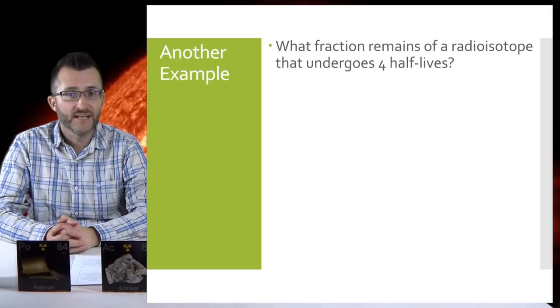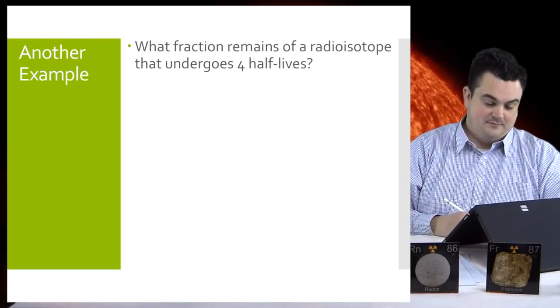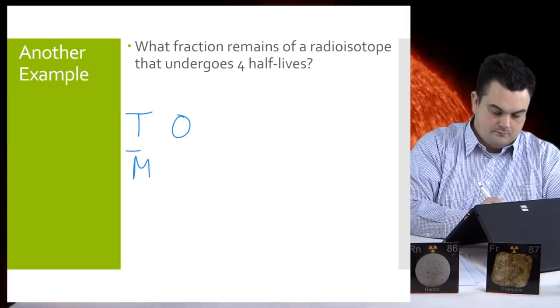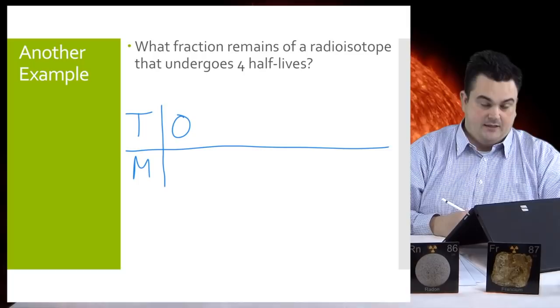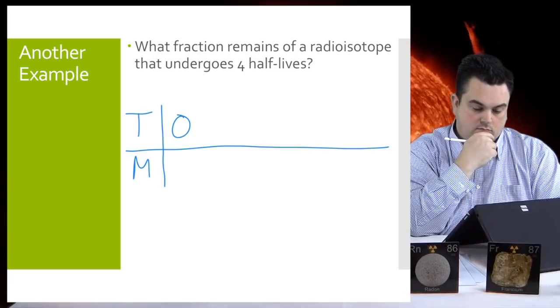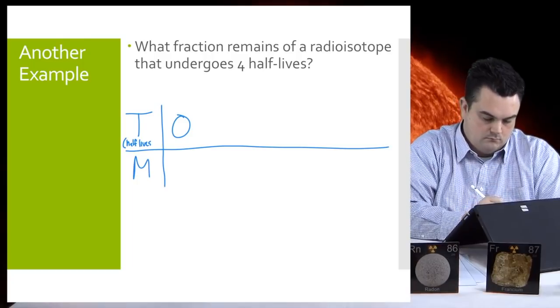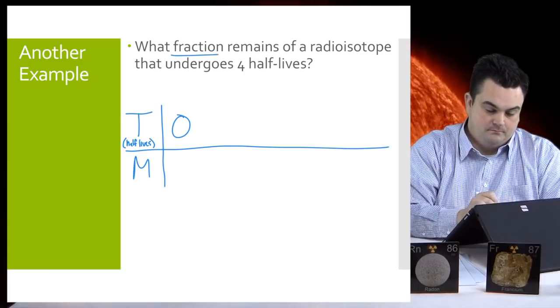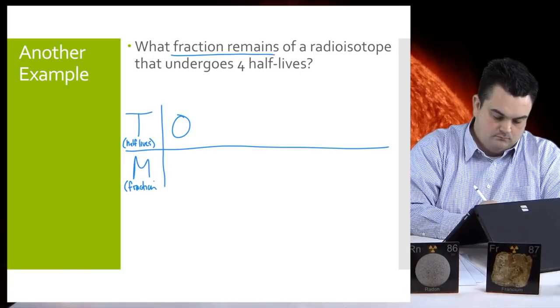All right, we're going to do another example. Are you still ready, Fu? We're talking about practice. I am. All right. So what fraction remains of a radioisotope that undergoes four half-lives? All right, let's start with our time chart. Okay. Got it. All right, now what unit is time going to be in here? It doesn't say a time. It doesn't really give a normal unit of time, but it does give us the number of half-lives, so we can measure time in number of half-lives. So let's note that by T. All right, what about the mass? It doesn't give me that either. It doesn't give you that either, but it does say what fraction, and that would be a fraction of the mass, even though they don't actually give us a unit of mass. So let's note that the mass will be in terms of a fraction.